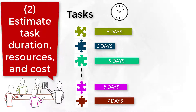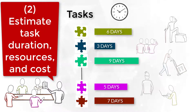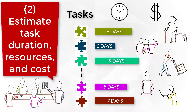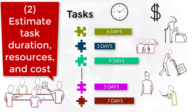Each task at the WBS lowest level is evaluated. For each one, we first try to estimate the effort work hours it will take to finish the task. Two things should be taken into consideration to determine the task duration: the effort work hours and resource availability. For instance, the project manager should understand if the person in charge of a task will be working full-time or part-time. Full-time dedication leads to a shorter duration.